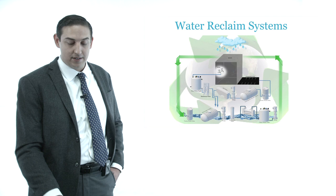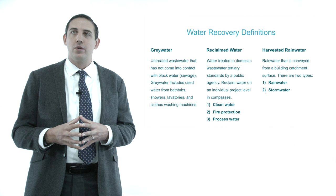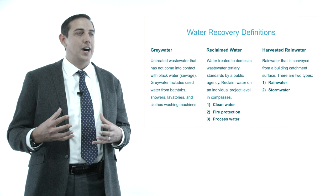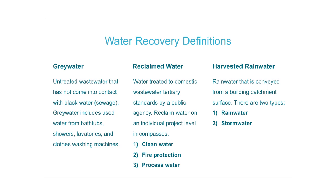I always like to open up with a brief understanding of what we're talking about. One of the things that comes up a lot when doing these types of systems is the nomenclature. We break it down into three distinct classifications. Most of you are familiar with gray water. Gray water is untreated wastewater that has not come in contact with black water or sewage. This is essentially any water from hand washing to dishwashers to laundry machines that's not been used in any kind of food preparation.